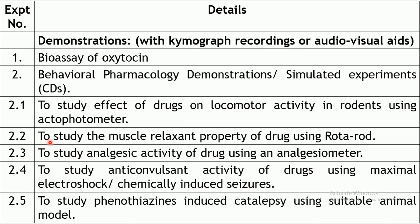The second behavioral pharmacology experiment is to study the muscle relaxant property of a drug using the rota-rod apparatus, where the animal's ability to retain itself on a rotating rod is checked — once the muscles relax, the animal falls off the rotating rod. The third experiment is to study the analgesic activity of a drug using an analgesiometer, such as the tail flick analgesiometer or the hot plate analgesiometer; the tail flick analgesiometer will be utilized for this particular activity.